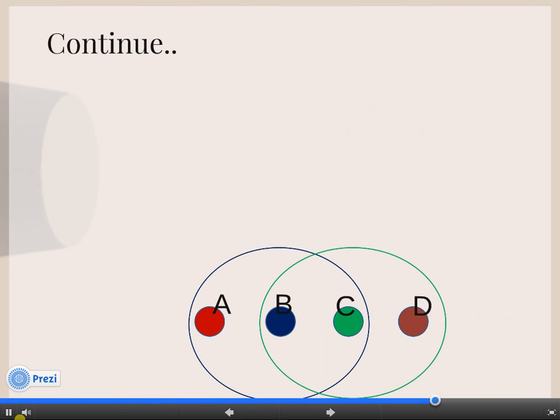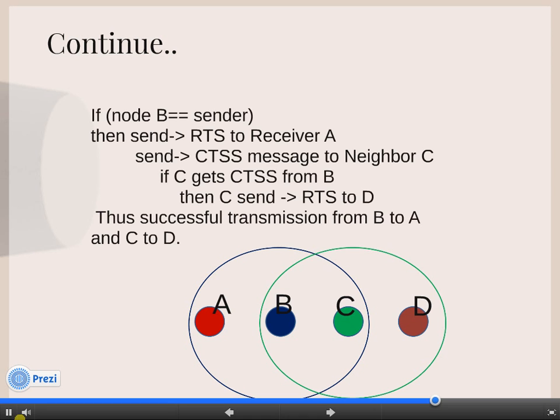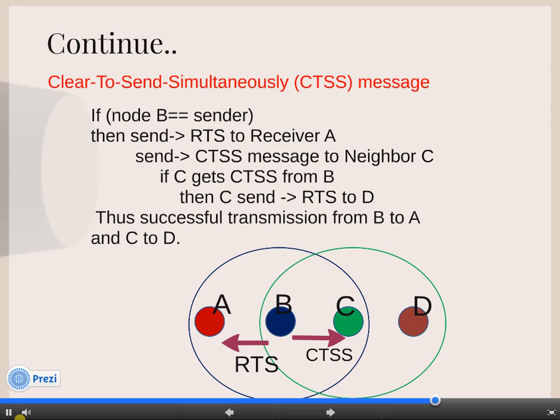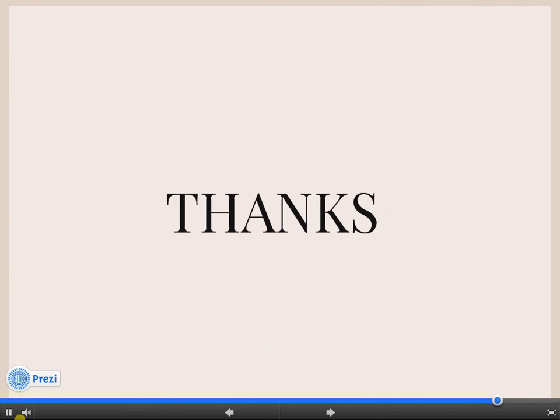What about using only a control message? There is no timer. In that case, when B wants to communicate, it will send RTS to node A and send a signal in the form of a control message to node C. CTSS is a control message that is Clear to Send Simultaneously. When C gets the CTSS message from node B, it will immediately send RTS to node D and communicate with D. Thanks to all.